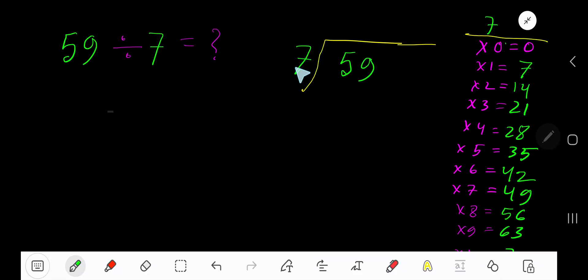59 divided by 7. Here 7 is the divisor, so we need the multiplication table of 7. 7 times 0 is 0, 7 times 1 is 7, 7 times 2 is 14, 7 times 3 is 21. To find the multiplication table of 7, just add 7 to the previous step: 0 plus 7 is 7, 7 plus 7 is 14, 14 plus 7 is 21. This process will continue.